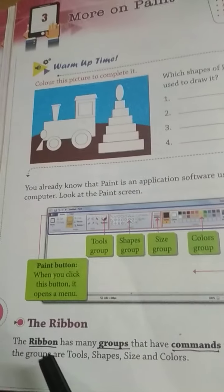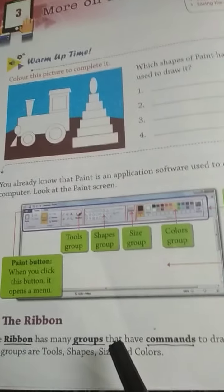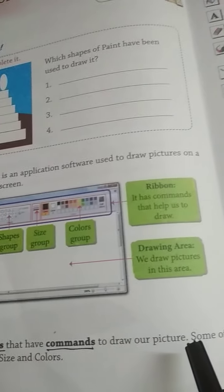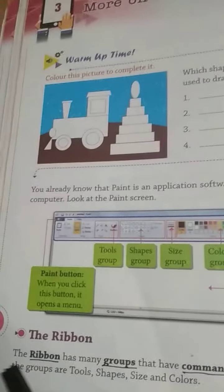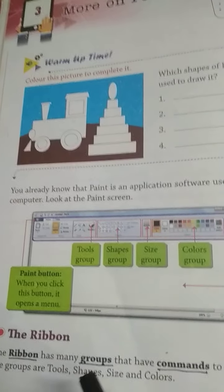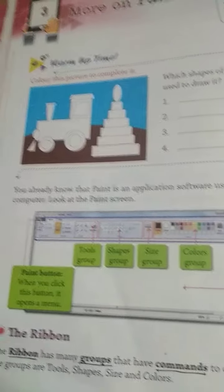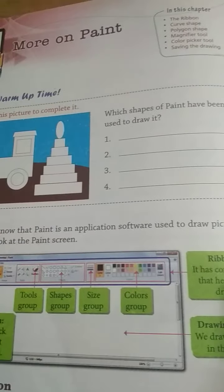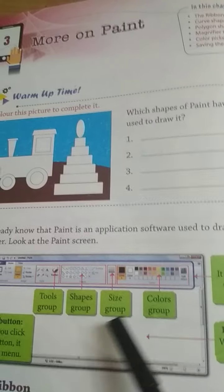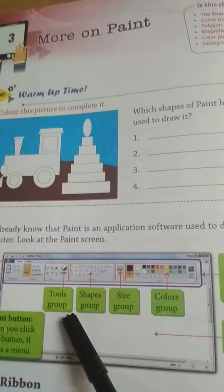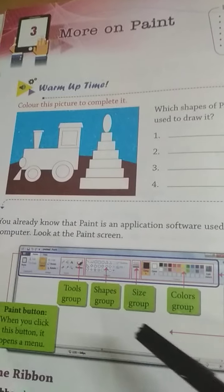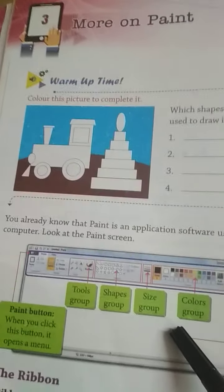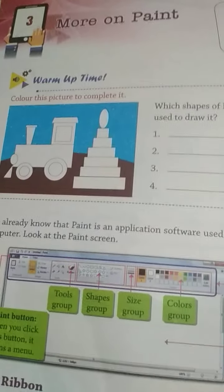The ribbon has many groups that have commands to draw our picture. Some of the groups are tools, shape, size, and color. Ye jo ribbon ke groups hain — color group, size group, shape group, aur tool group hote hain — jo ki aapko drawing mein help karte hain. Ye sab ribbon area mein hote hain.